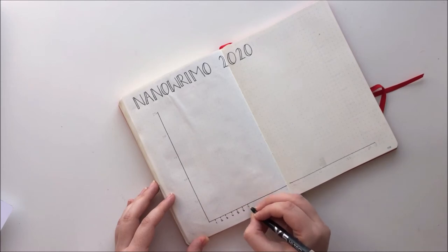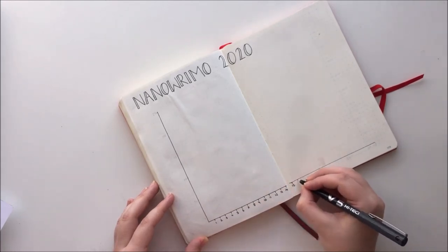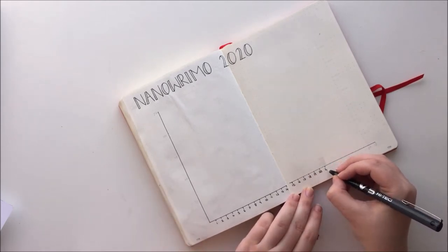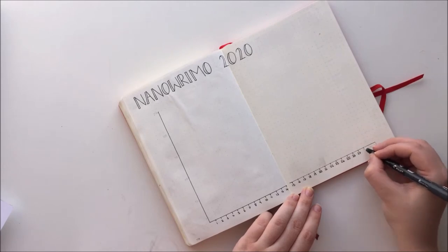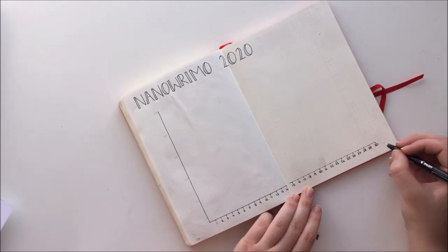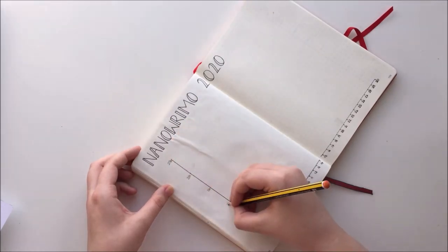This might seem odd, but I mostly want to have this to look back on in the future, not as something I fill in every day. Until I know how many words I manage to write overall, I won't know how to label the y-axis. My aim is 25,000 words, which is what I've written here in pencil. But depending on exactly how much I'm actually able to write, I might have to adjust this later.